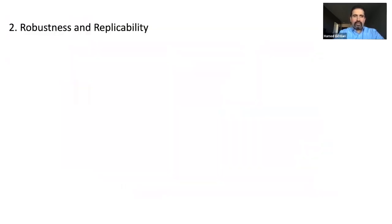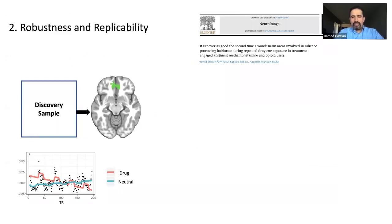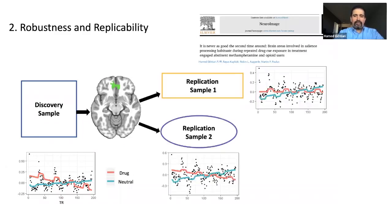The second issue that makes me like fMRI drug cue reactivity is about robustness and replicability. We have recently shown that when we have a discovery sample and define a specific ROI or cluster with a specific behavior — including specific temporal dynamic behavior — and if we have replication samples with a slightly different clinical context, even different drugs of choice, we can have almost the same response in those replication samples.